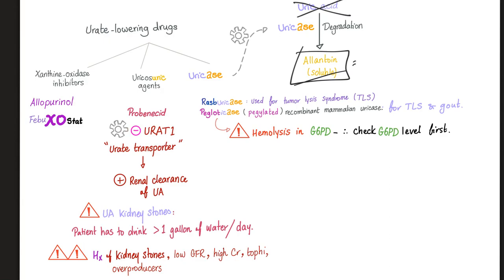Probenecid is a uricosuric agent. It inhibits URAT1 (urate transporter 1), leading to increased kidney clearance of uric acid. Side effect: uric acid kidney stones, because you're increasing uric acid secretion in the urine — patients usually have to drink more than one gallon of water per day. Contraindications: do not give probenecid if the patient has a history of kidney stones, low GFR, high creatinine, tophi, or if they are overproducers.